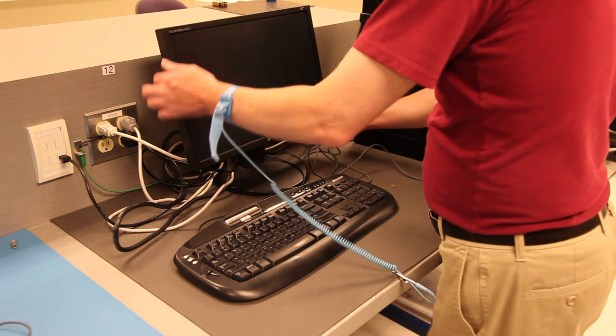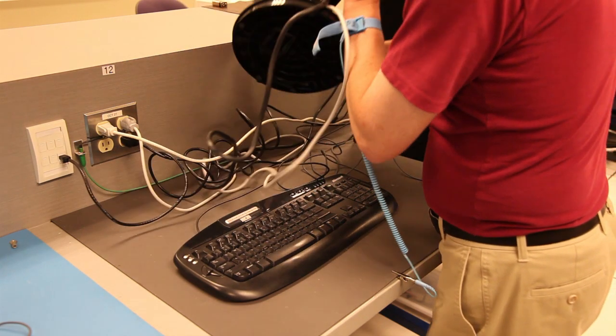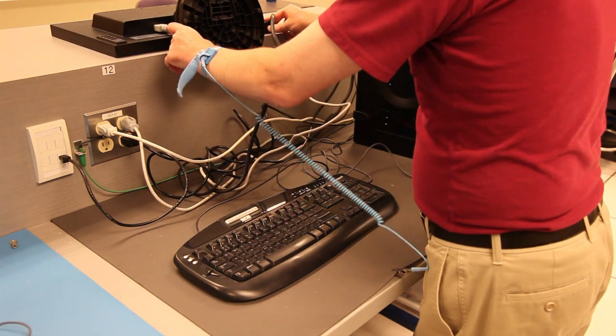Carefully move the monitor, keyboard, and mouse to the upper part of the bench so that it's out of your way. Please make sure that there's nothing under the monitor if you put it screen side down.